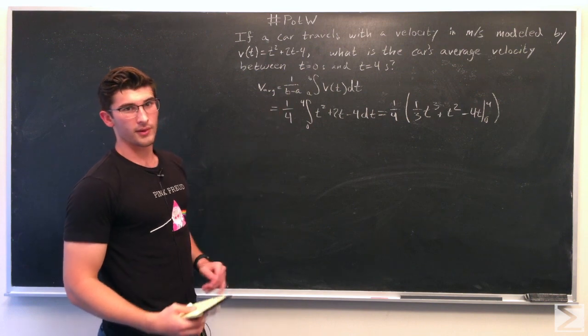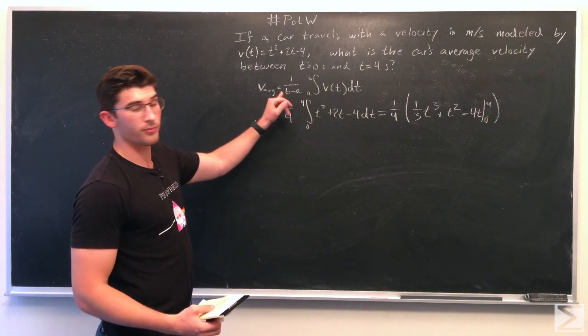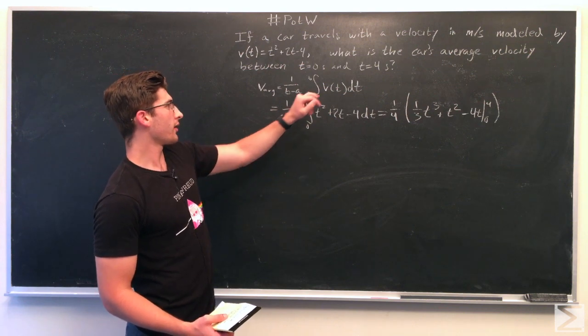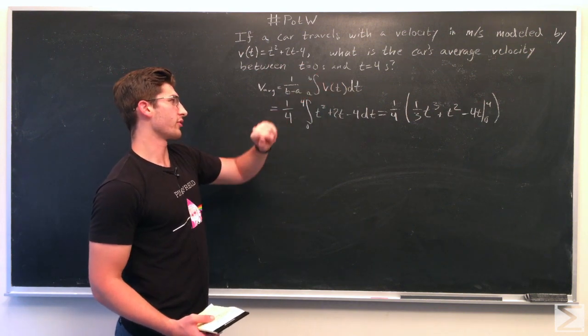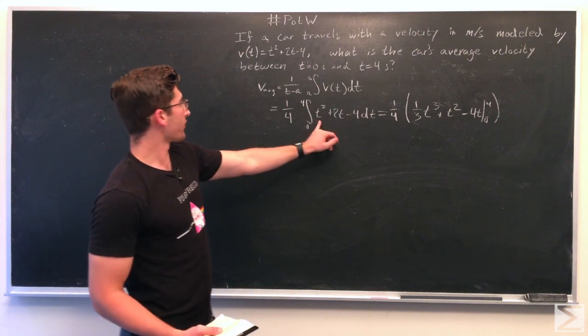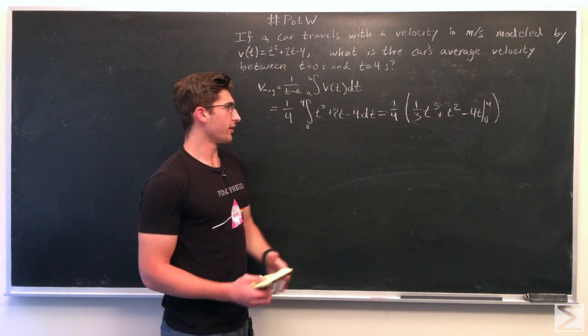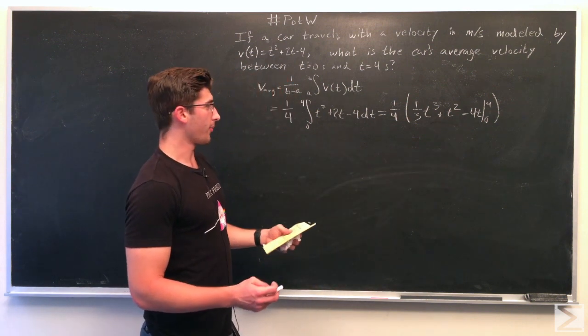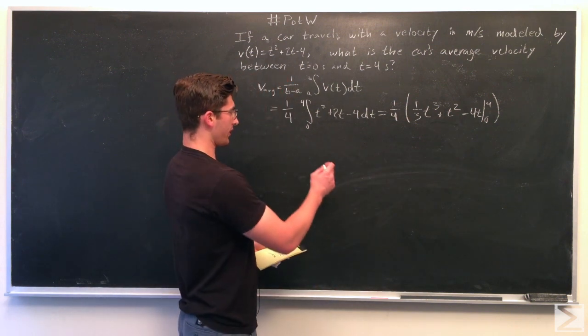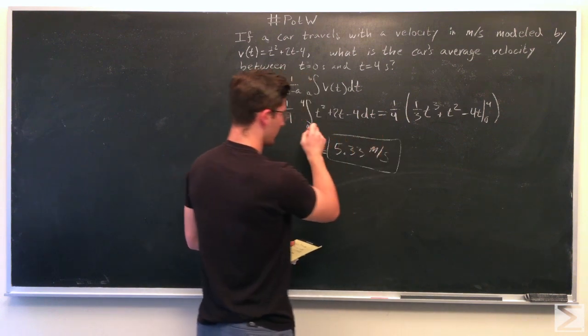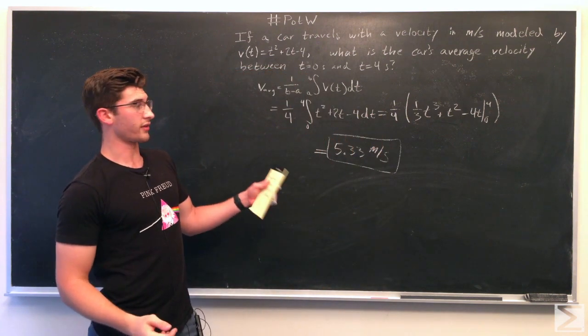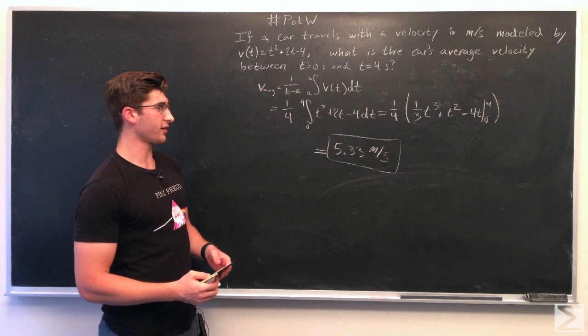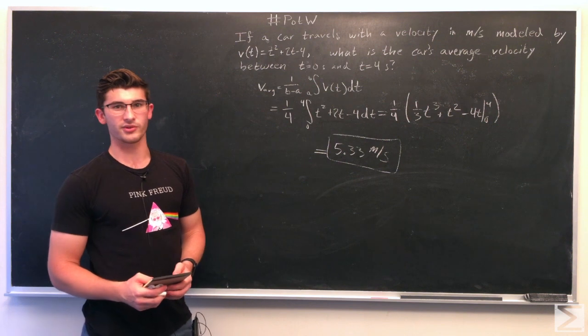So 1 over b minus a is going to be 1 over 4 minus 0. And then we're going to integrate the function that we're given, v of t. And so then here's our antiderivative. And we're going to go ahead and plug that all in. And when you plug that in, you're going to get that the average velocity of the car between time equals 0 and time equals 4 seconds is 5.33 meters per second.